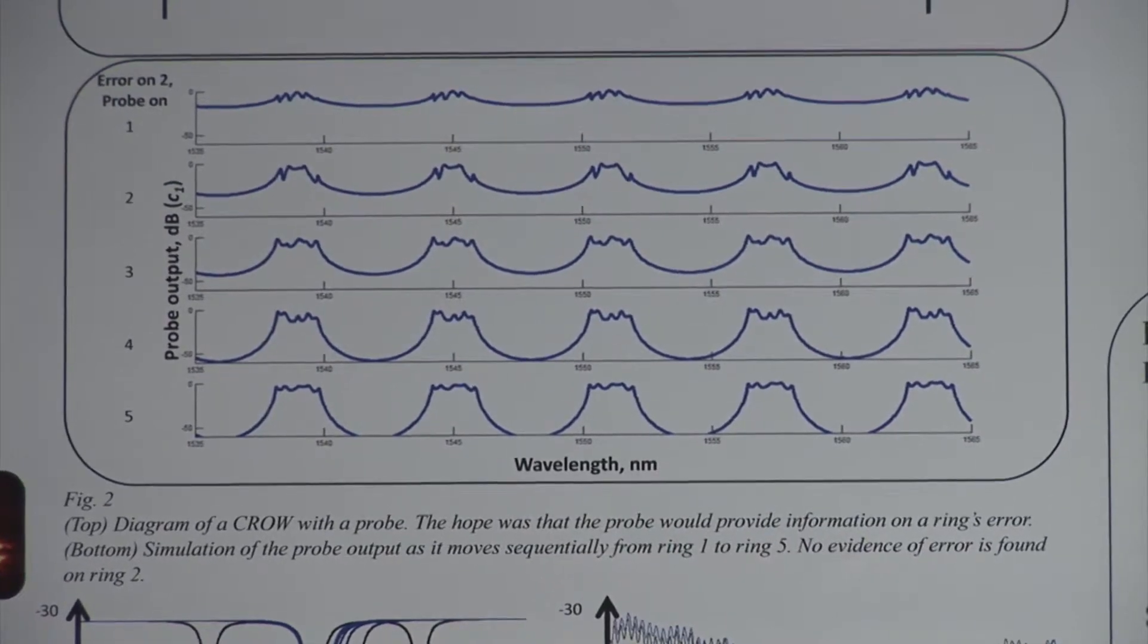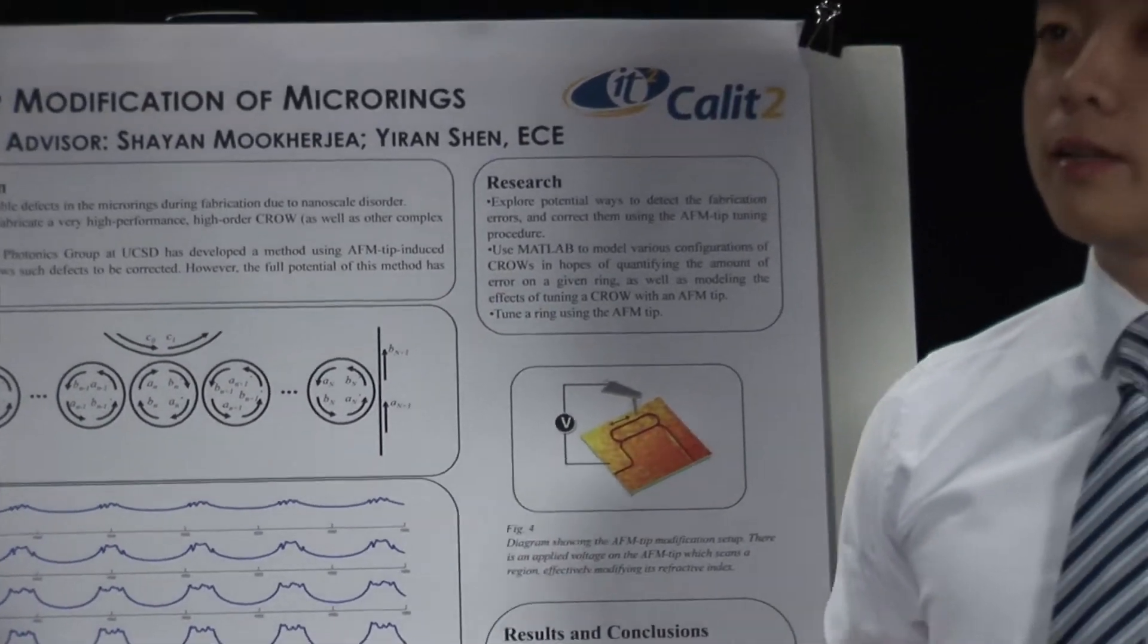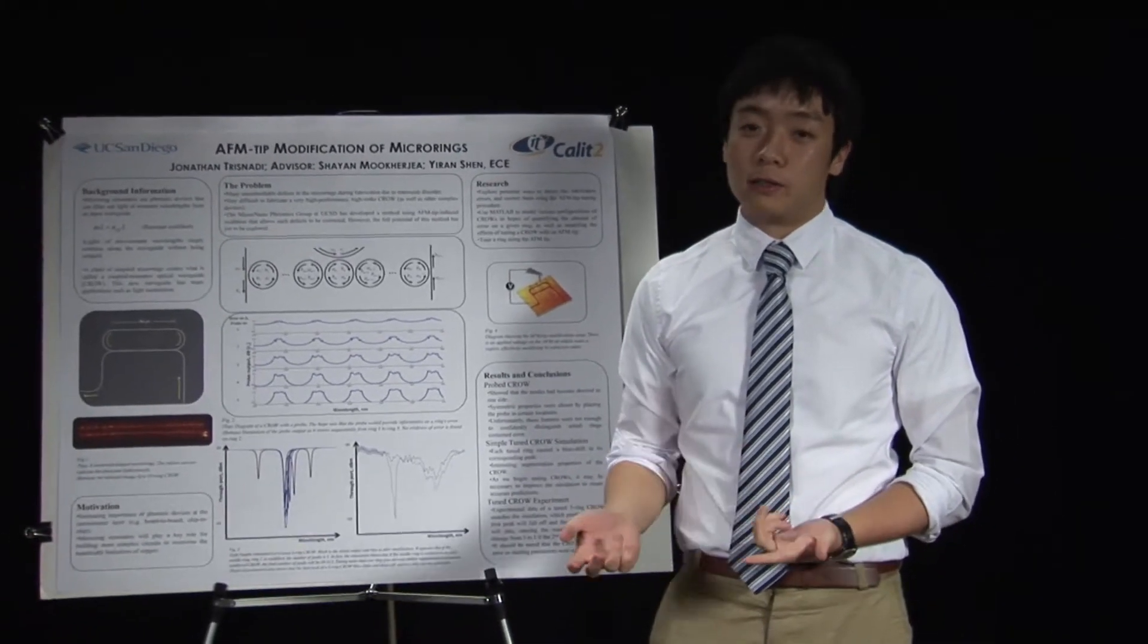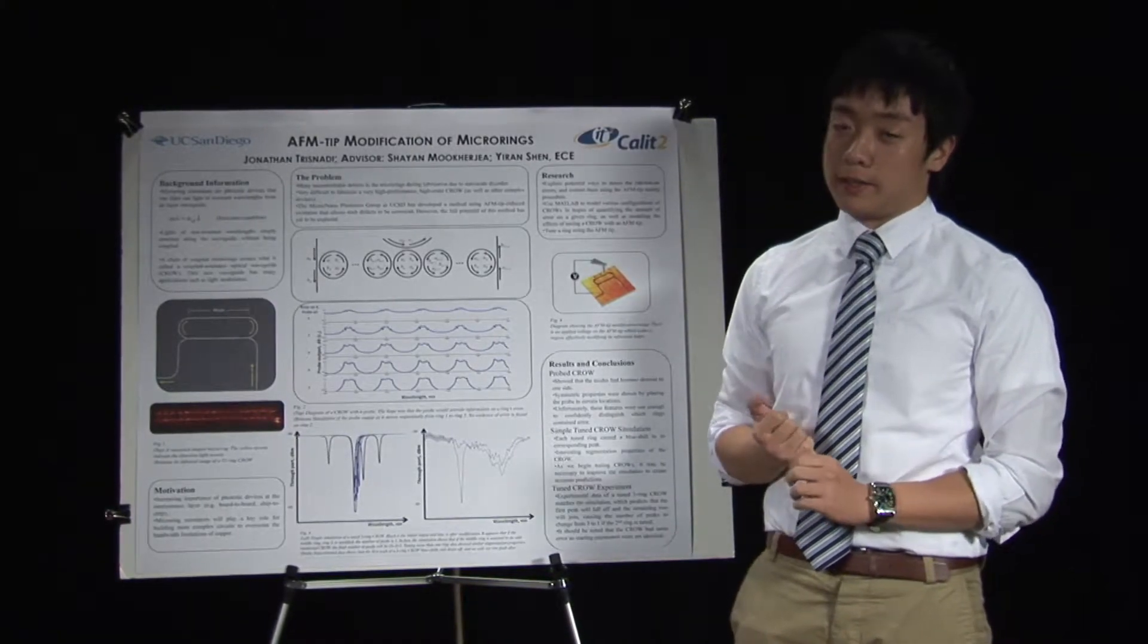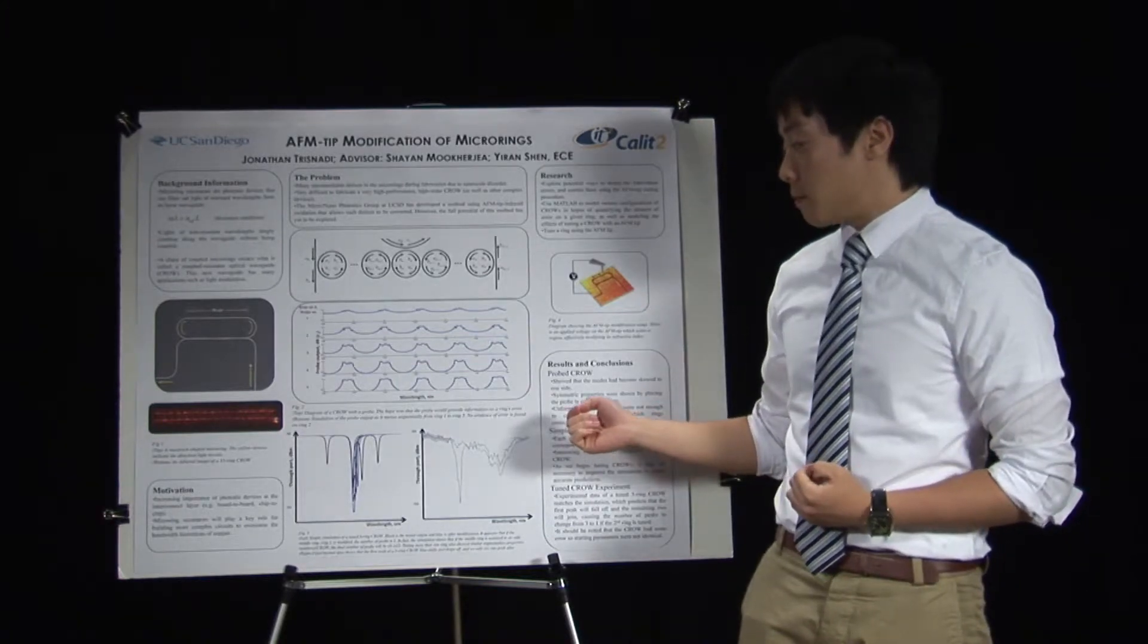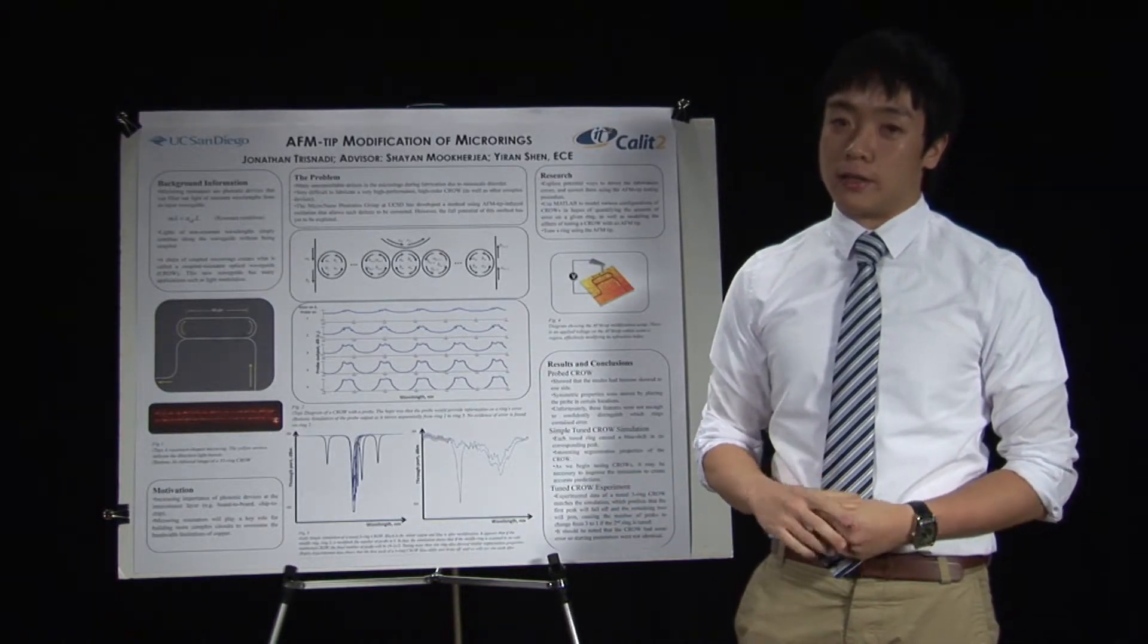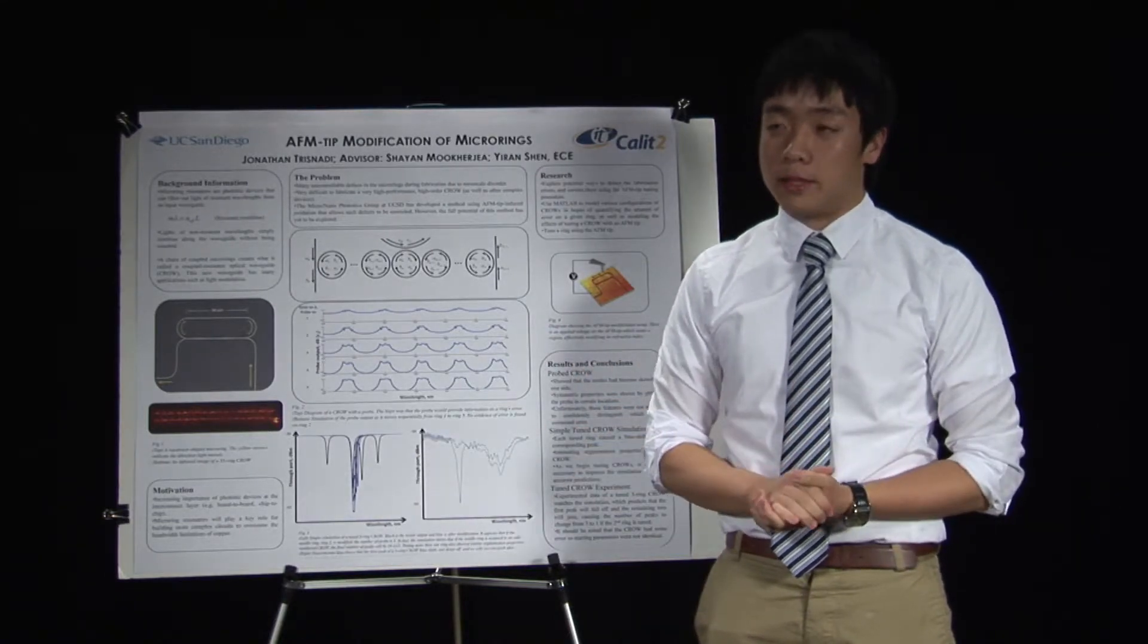which was a tuned CROW simulation. So in the past, we only used the AFM tip to correct single rings. But I wanted to see what would happen if we tuned a CROW. If we tuned one ring in a CROW or two rings in a CROW, what would happen? So my results yielded some interesting results. And most interesting was perhaps the segmentation properties of tuning. We could take a big CROW and tune it, and it would look like a little CROW. We could segment it into smaller pieces.